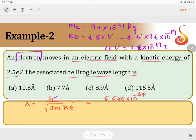34 divided by root of 2 into 9.1 into 10 power minus 31 into 2.5 into 1.6 into 10 power minus 19. If you can simplify all this, we are going to end up with...